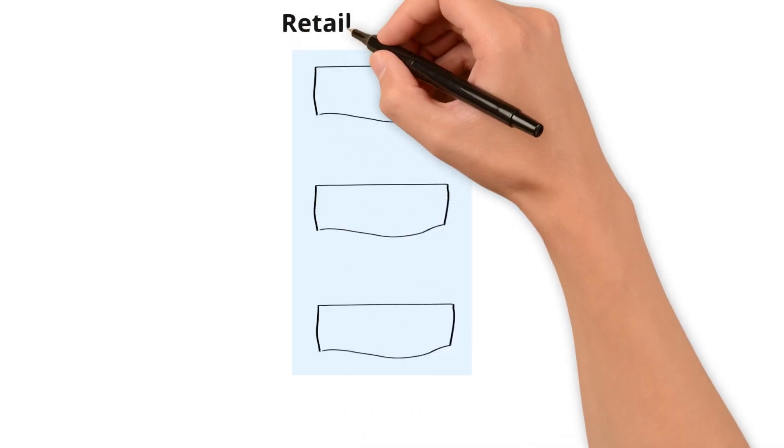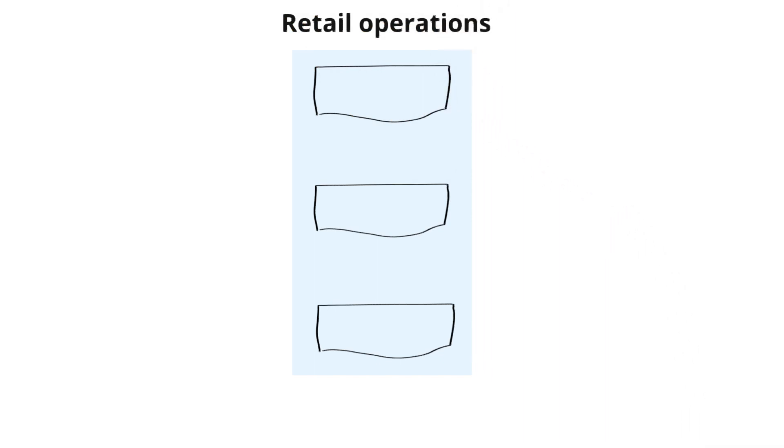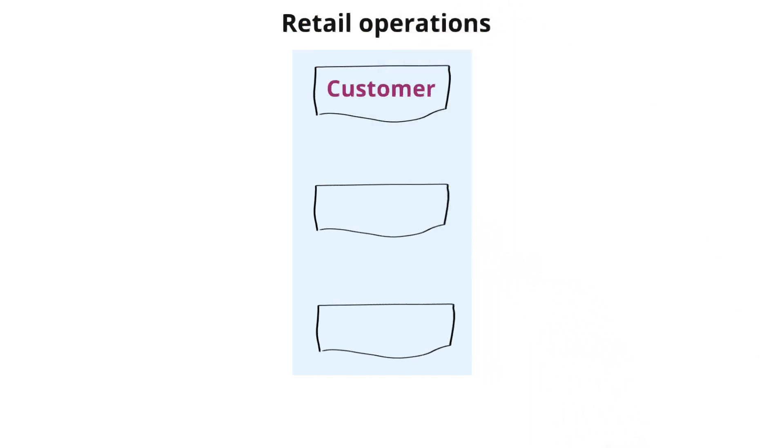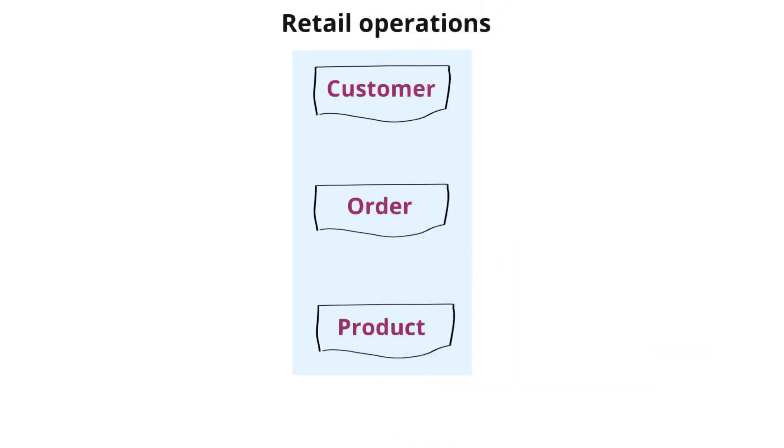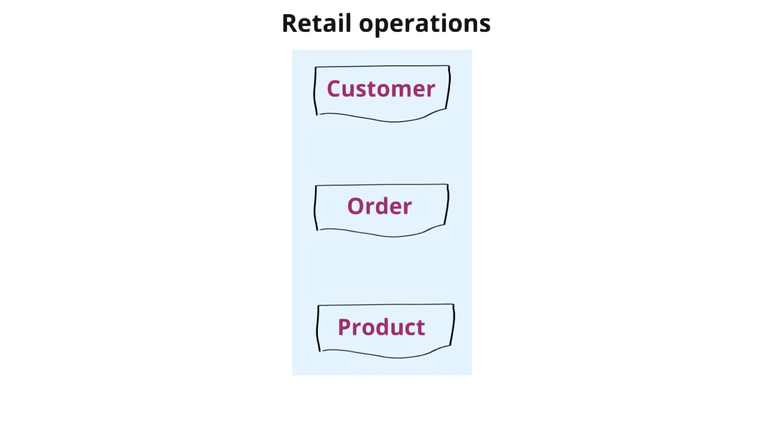As we begin our illustration, we'll focus on three primary data sources that are crucial for retail operations: customer data, order data, and product data.